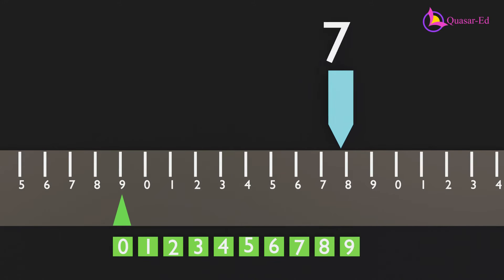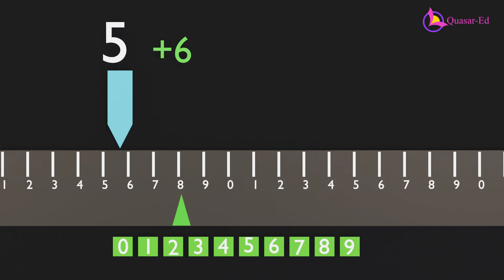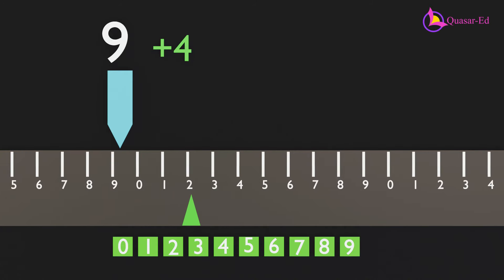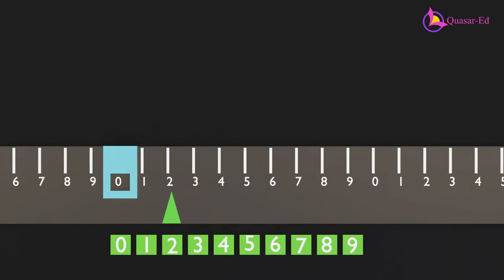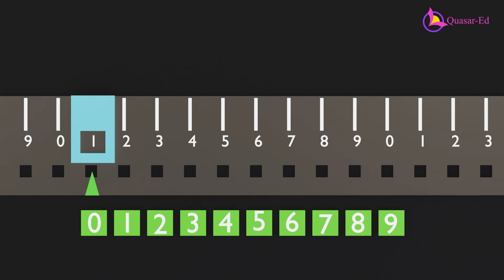Every time we want to add a number between zero and nine, we simply move the ruler to the pointer. It's the same as moving the pointer, but more convenient, and it saves us from manual counting. To make it even more convenient, we could change the pointer design and add slots to the rulers for precise movement.